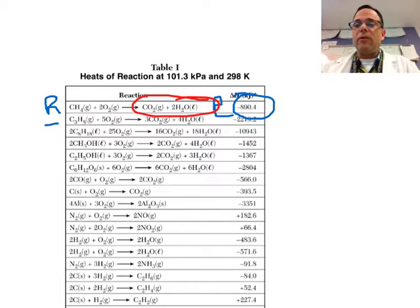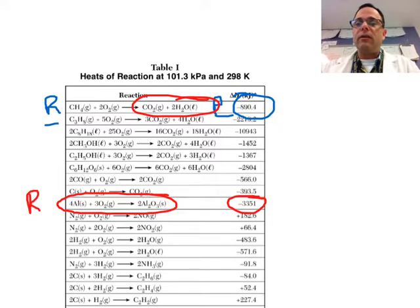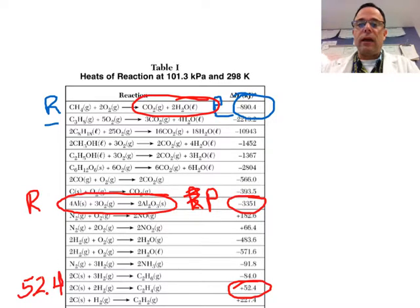So for that matter, for this one right here, would this 3,351 be written on the reactant side or the product side? The answer, the product side. Now, what about this one down here? Which side would you write that? And the answer, this 52.4 would be written on this side because it is endothermic. And that brings me to this.